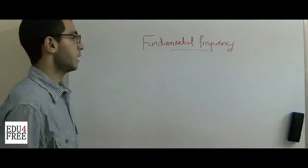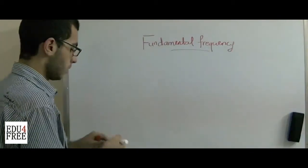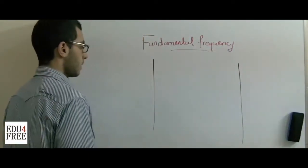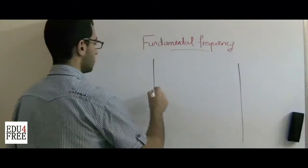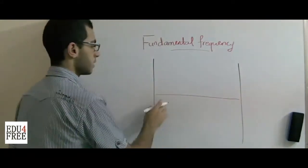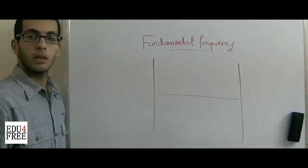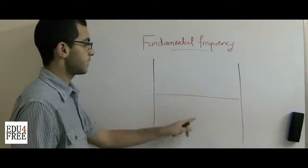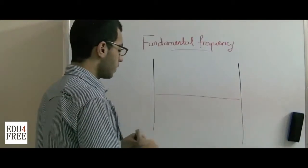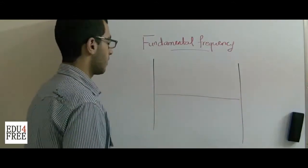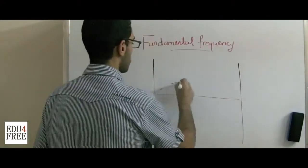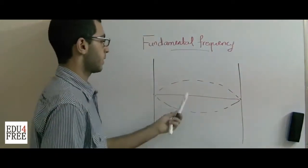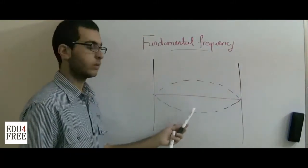This fundamental frequency is related to standing waves. Simply, if we have a string attached to two walls, so it's stretched like that, and somebody pulled the string upwards and then leaves the string. There are several patterns of waves that the string may make. A pattern may be like that, so that the string goes up and down, then it returns to its normal position.